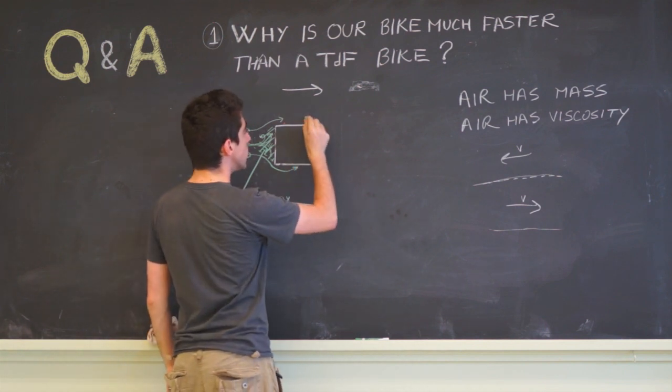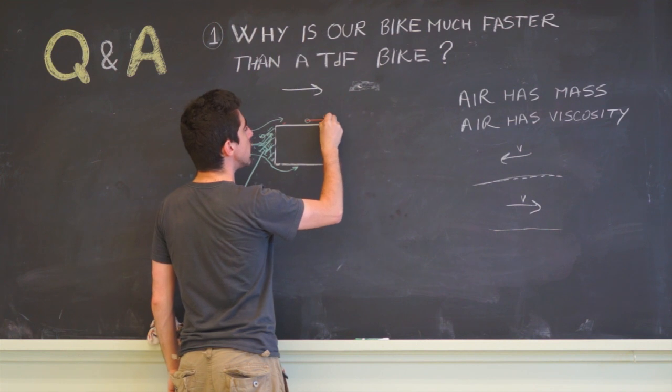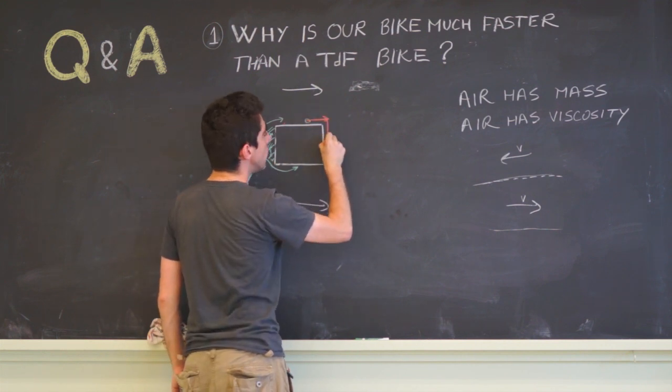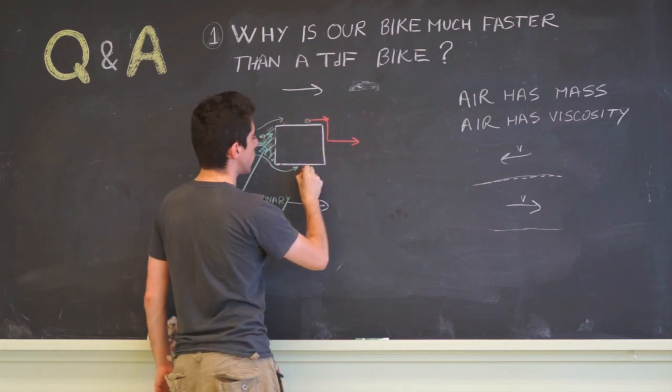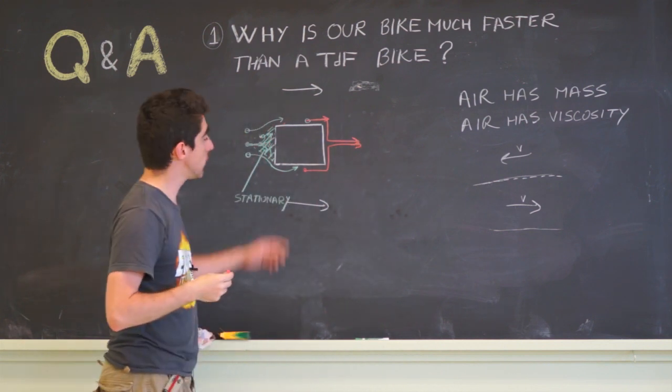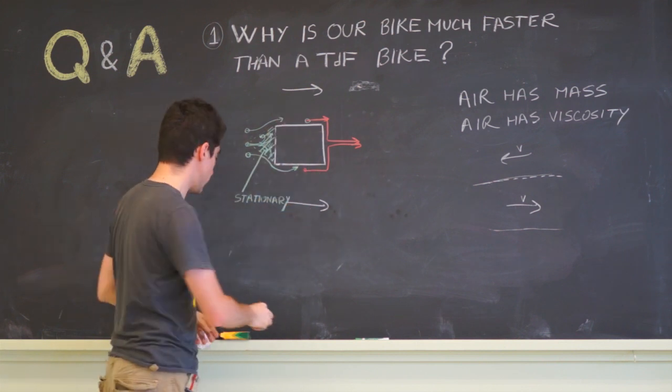So we have a particle traveling in this direction. It is not going to be able to do again a 90 degree turn and unite with a particle from this side. This is not physically possible because of the viscosity and the mass of the air particles.